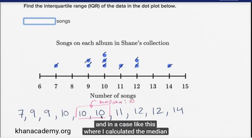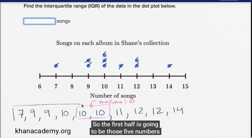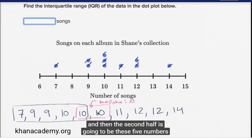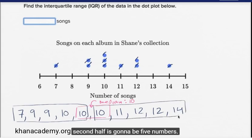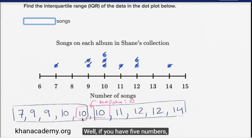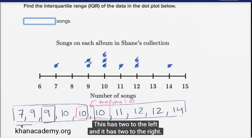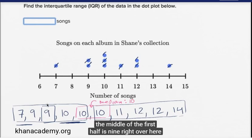In a case like this where I calculated the median using the middle two numbers, I can include the left ten in the first half and the right ten in the second half. So the first half is going to be those five numbers, and the second half is going to be these five numbers. If I had a true middle number like the previous example, we'd ignore that when looking at the first and second half. The median of this first half — five numbers with an odd count — is nine, which has two on either side.